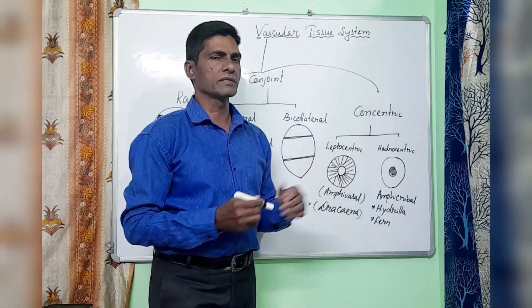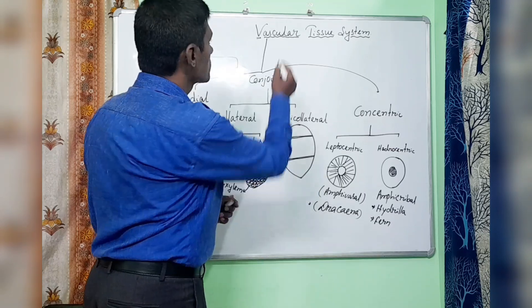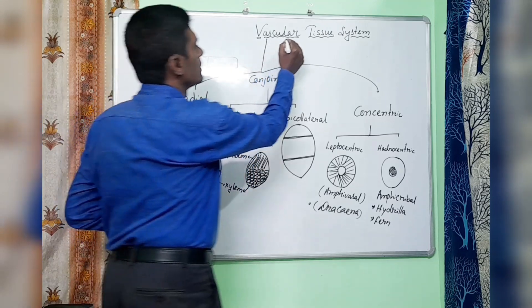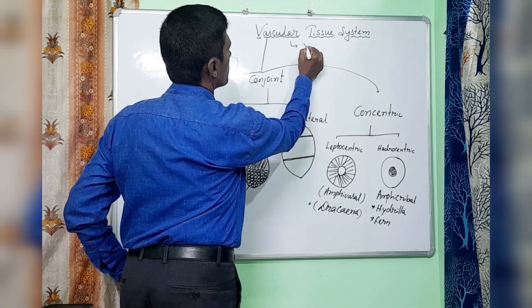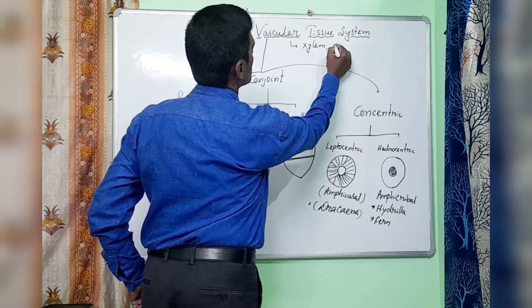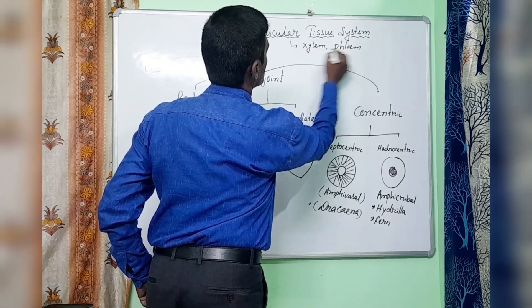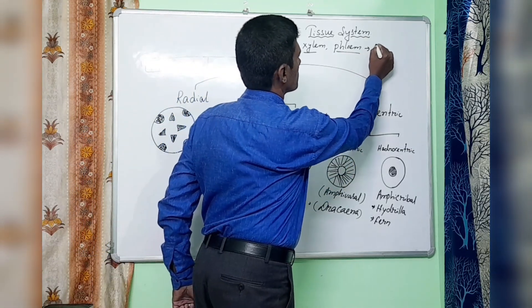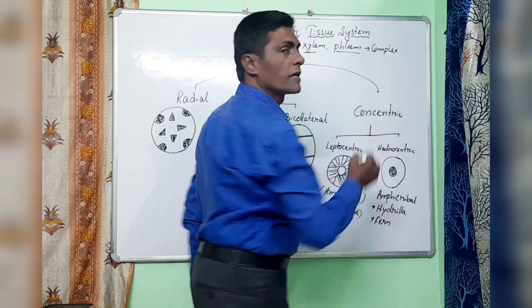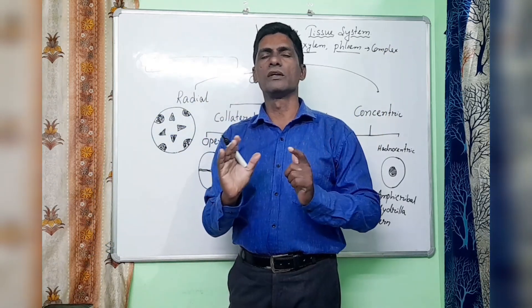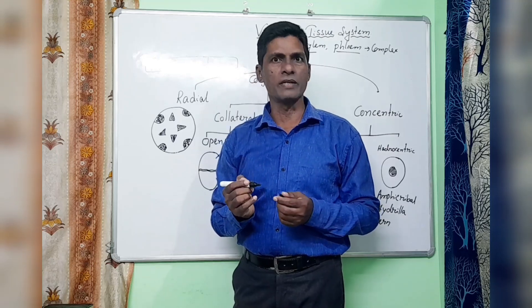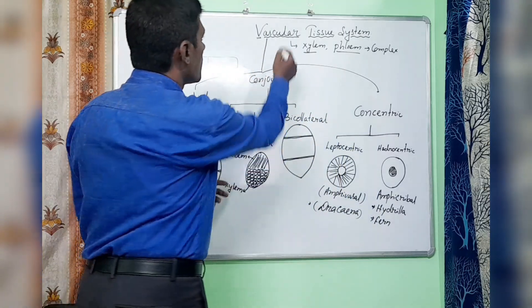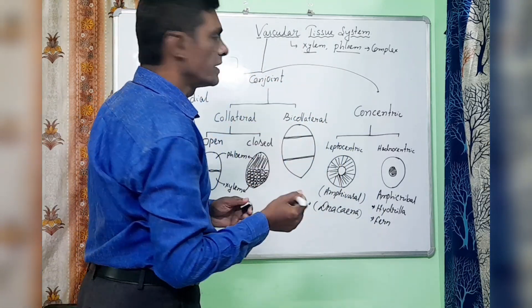They will ask a number of questions from this. The vascular tissue system — one vascular bundle belongs to two types of tissue: xylem and phloem. Both belong to the complex tissue. Complex tissue may arrange in different manners in different parts of the plants, especially in the root, stem, and leaf.